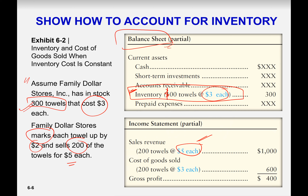When the sale occurred, inventory decreased from 300 to 100 remaining. There are two entries: one related to sales revenue increasing, and another to decreasing inventory at cost. There is also a cost of goods sold expense — you increase the cost of goods sold expense for the 200 units sold at their cost price.